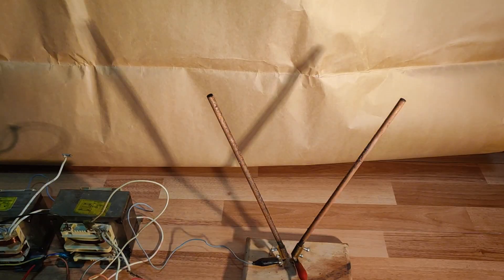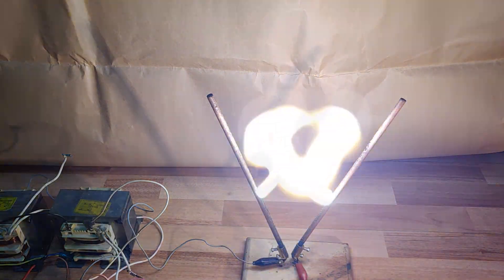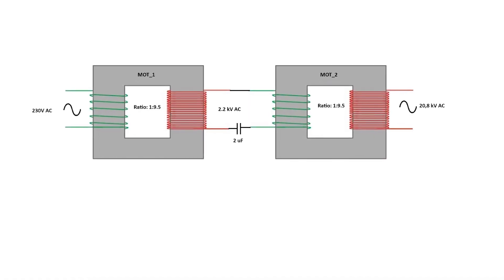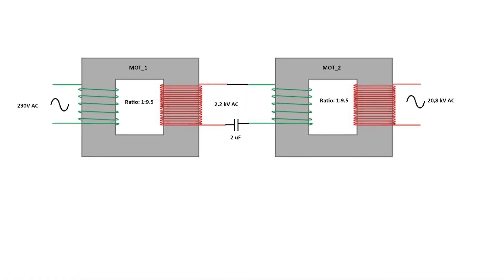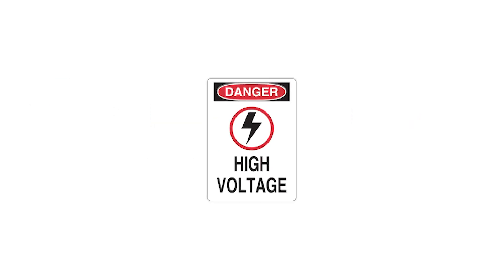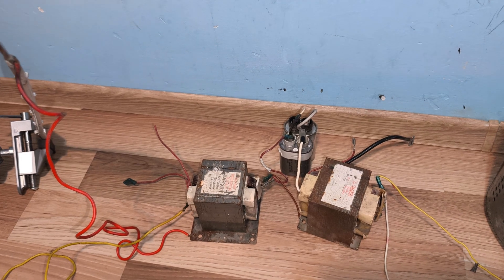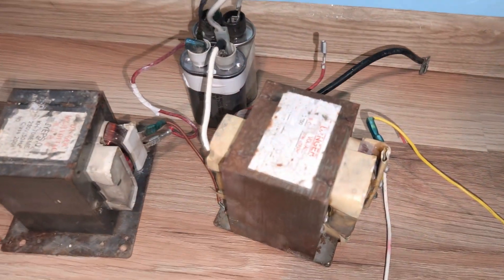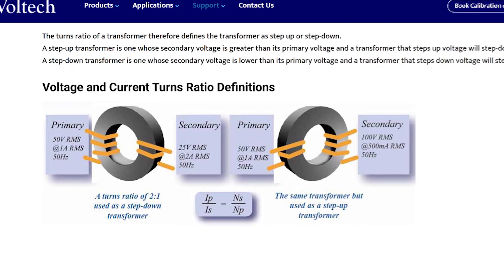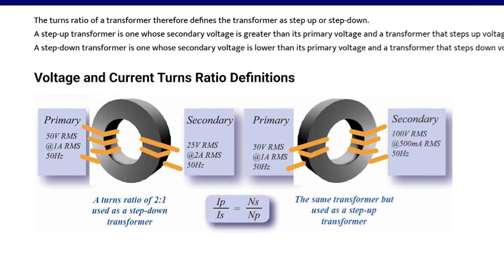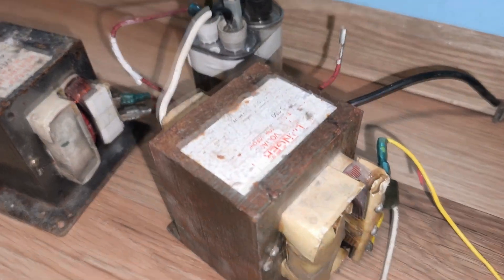Now if you take the 2000 volts output from one microwave oven transformer and feed it directly into the primary of another transformer, we should, in theory, step it up again. And if our second transformer has the same turns ratio, we could be looking at voltages around 20,000 volts.